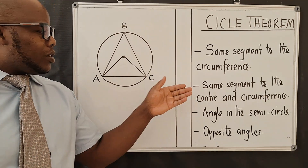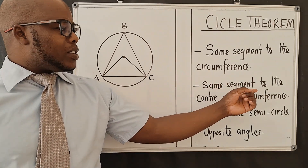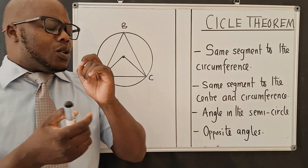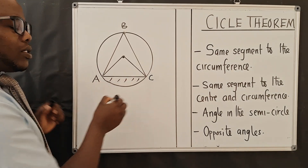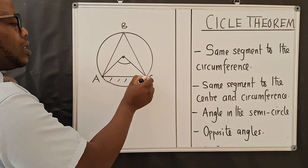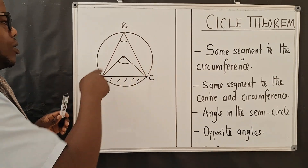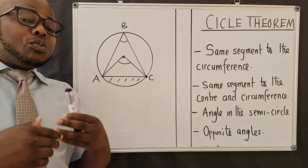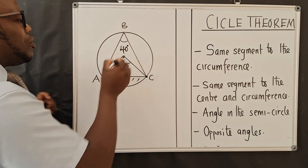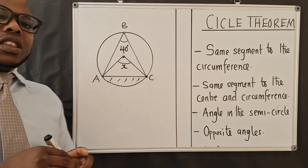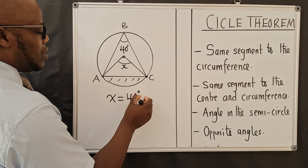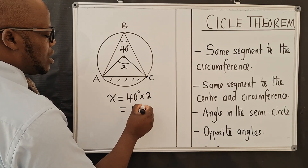We are now on property number two, which says same segment to the center and circumference. You can see we've got a segment here, and there is an angle formed at the center. For as long as this angle is coming from the same segment as the angle at B, this angle at the center will be twice the angle at the circumference — that means times two. So if this is 40 degrees, the angle at X will be 80 degrees: 40 degrees times 2 equals 80 degrees.